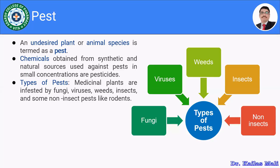The first thing one should know is what is meant by the pest. Pests are the undesired plants or animal species. In the farm, you will find some undesired plants growing along with the crop, or certain animals and creatures like insects that affect the main crop. The chemicals obtained from synthetic and natural sources which are used to control pests in small concentrations are known as pesticides.